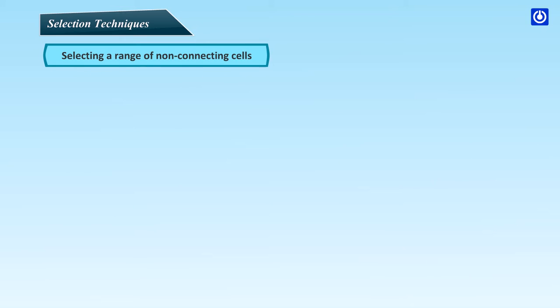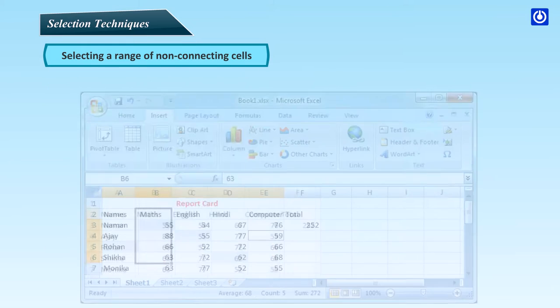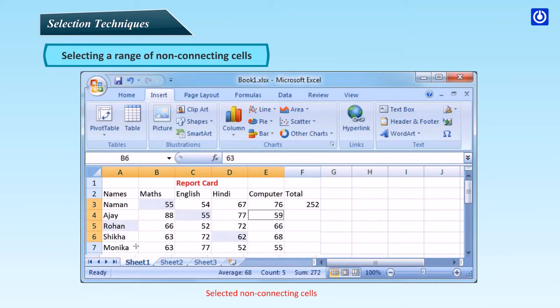Selecting a range of non-connecting cells: sometimes we need to select multiple cells that are not next to each other, such as A5, B3, C4, and D6. To do this, click on the first cell E5, then while keeping the Control key held down, click on cells B3, C4, and D6. When you release the Control key, the cells will remain selected.